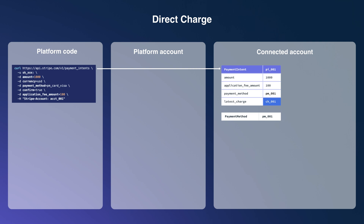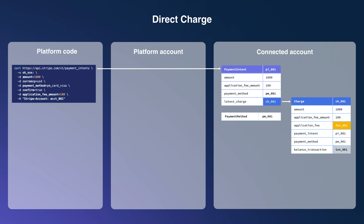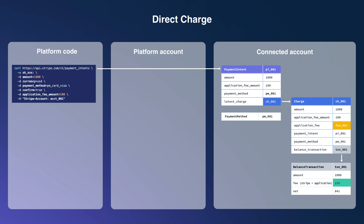The payment intent also contains a reference to the underlying charge object, which has similar information and represents a single attempt to move money into a Stripe account. Every time funds move in or out of a Stripe account, a balance transaction object is created. This one shows the account got $10, but then had to pay the Stripe fee — here 59 cents — and the application fee, 100 cents. So in the end, the connected account netted $8.41.